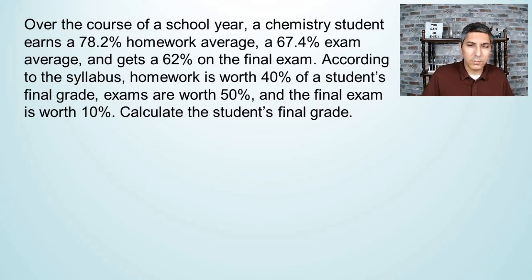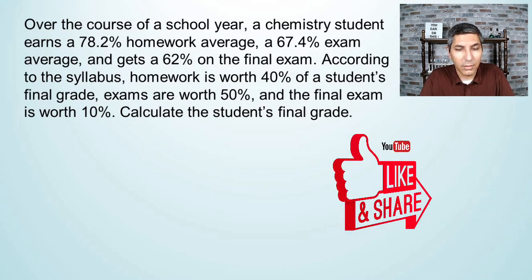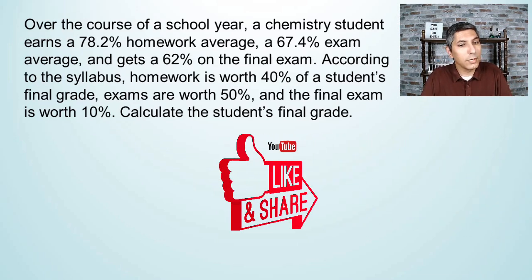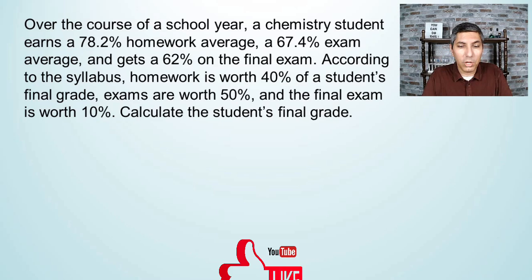Here's a problem. Over the course of a school year, a chemistry student earns a 78.2% homework average, a 67.4% exam average, and gets a 62% on the final exam. According to the syllabus, homework is worth 40% of a student's final grade, exams are worth 50%, and the final exam is worth 10%. Calculate the student's final grade.